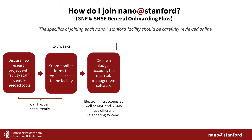Now that we know more about Nano at Stanford's capabilities, how do we join? The first step is to identify your needed tools and discuss any new research projects with facility staff to overview safety concerns. Then when registered as a user, provide departmental and group affiliation, as well as the PTA number to charge for tool time. Once your registration is approved, you can create a Badger account, which we will discuss shortly. This process can take one to three weeks, so plan accordingly.